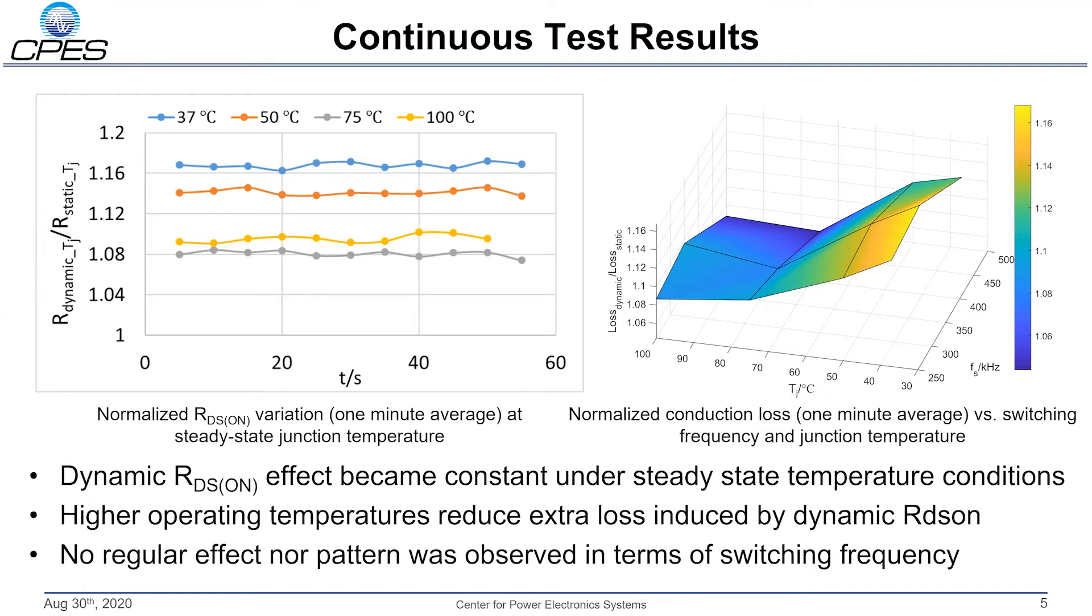The figure on the right shows a 3D plot of the extra loss variation versus the switching frequency and junction temperature, where the general dependence trends can easily be observed. Specifically, higher junction temperature diminishes this phenomenon, and the switching frequency has nearly no impact on this dynamic effect.